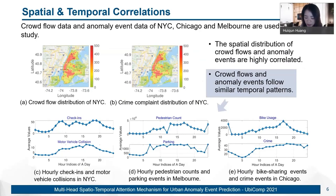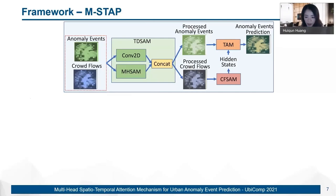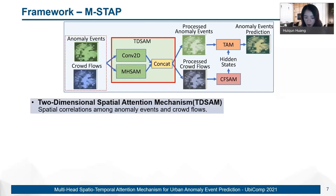To leverage the spatial and temporal patterns of anomaly events and crowd flows, we propose AMSA to forecast the future citywide distribution of anomaly events. The figure on the slide illustrates the main structures of our proposed model. Within a period of time, the anomaly events and crowd flows interact closely to different degrees between regions. So capturing these spatial correlations between different regions would help to understand the spatial dynamic trend of anomaly events and crowd flows. Motivated by this, we designed the two-dimensional spatial attention mechanism to capture both the global and local spatial correlations between anomaly events and crowd flows.